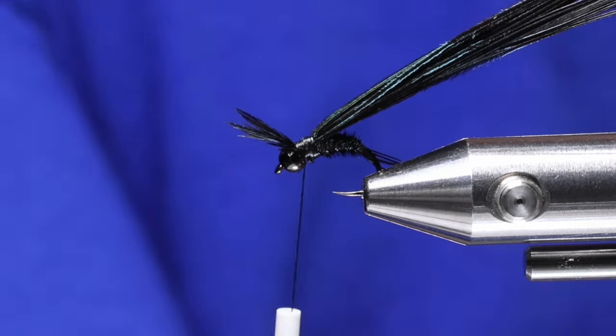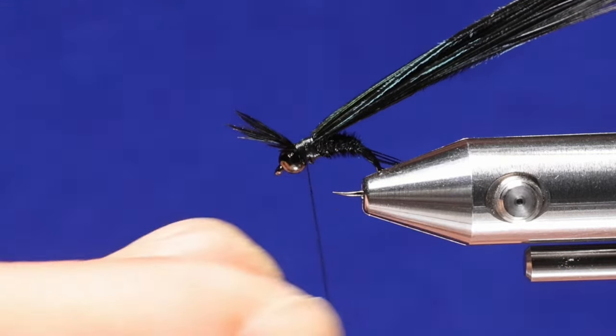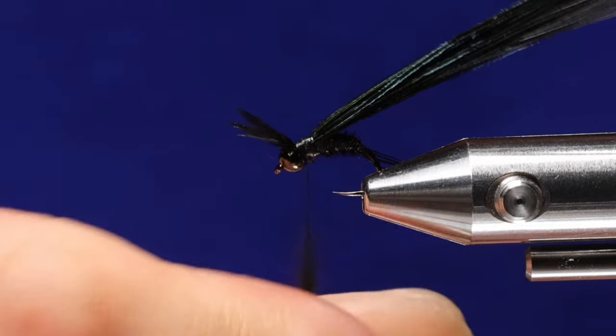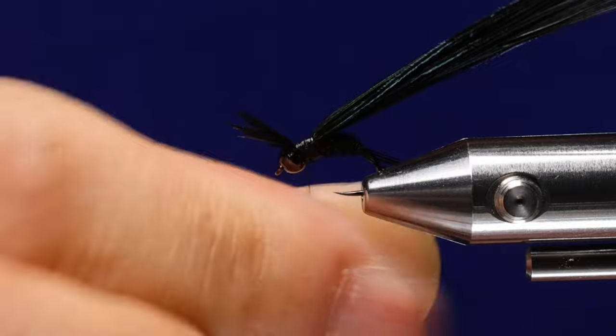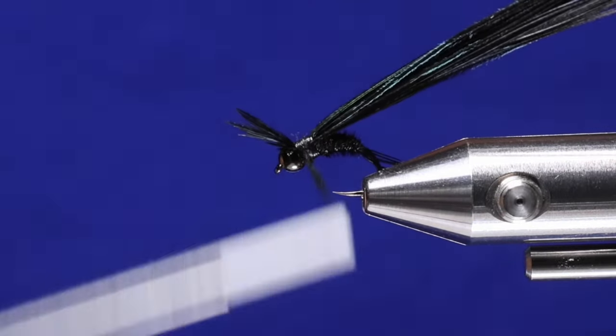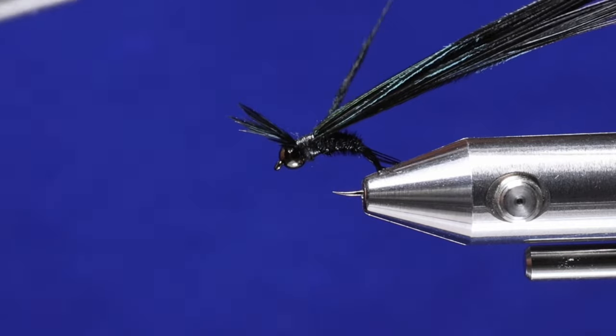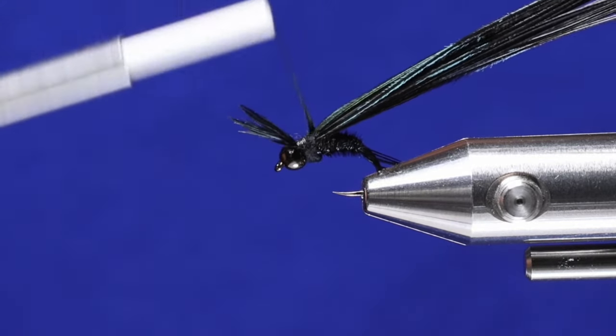Now for the thorax, I'm just using super fine dubbing. You can also use rabbit or any other really dark black dubbing. I like the super fine because it's a small fly and you can get a really tight dubbing noodle with the super fine. And all we're really doing is just building up a slight bump here for where the wing case is going to be.